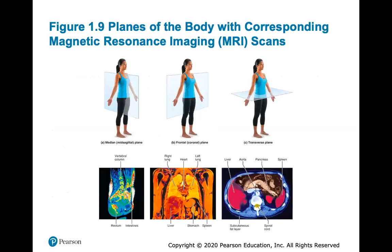This shows the planes of the body with corresponding MRI scans. MRI scans are really cool — some of you have probably had one, because they take a complete picture of the body, and from the scan they can make different cuts to see organs, bones, or anything wrong inside. Here the median or mid-sagittal plane runs right down the middle, separating the body into right and left halves. Viewing this MRI scan, you can see the vertebral column, the intestines, and the front and back of the body.